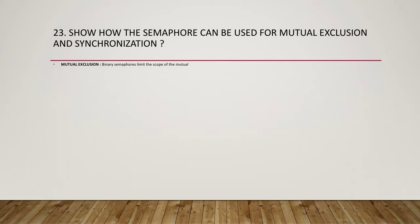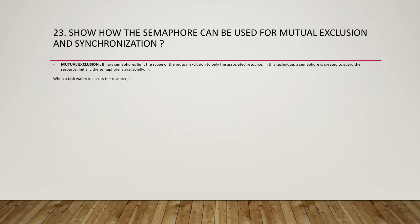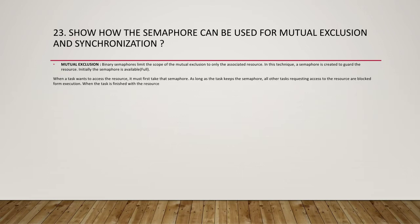In this technique, a semaphore is created to guard the resource. Initially the semaphore is available — full. When a task wants to access the resource, it must take that semaphore. As long as the task keeps the semaphore, all other tasks requesting access to the resource are blocked from execution. When the task is finished with the resource, it releases the semaphore, allowing another task to use the resource. Access to a resource requiring mutual exclusion is bracketed with sem_take and sem_give pairs.